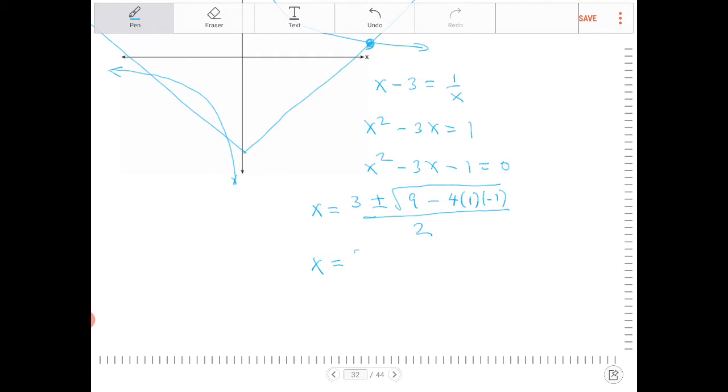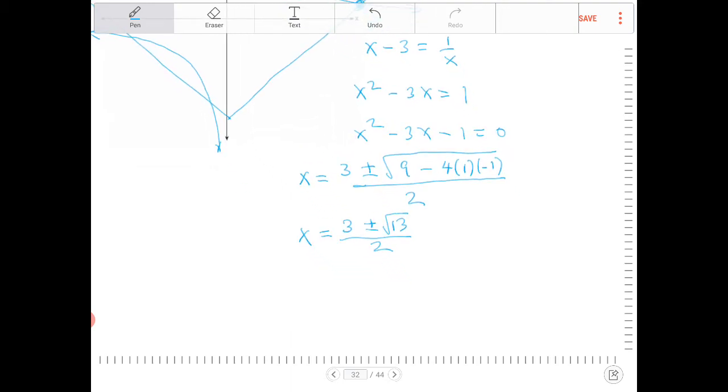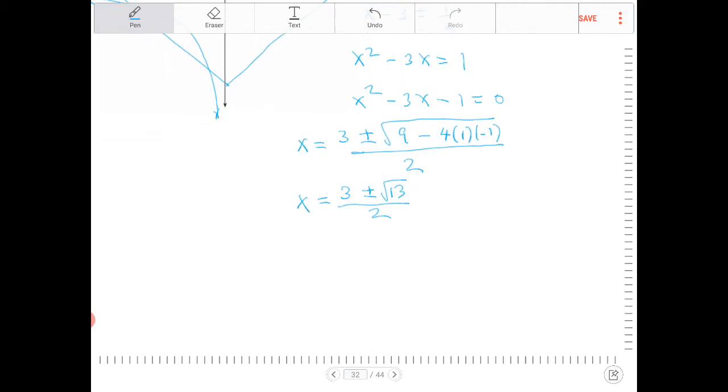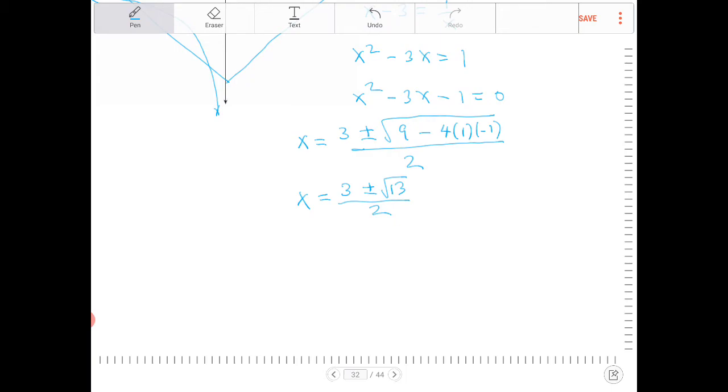So the value of x will be 3 plus or minus 9 minus negative 4, so that's 13, over 2. We're looking for only the positive answer here. So square root of 13 is definitely greater than 3, because square root of 9 is 3. So the only answer that works is 3 plus radical 13 over 2.